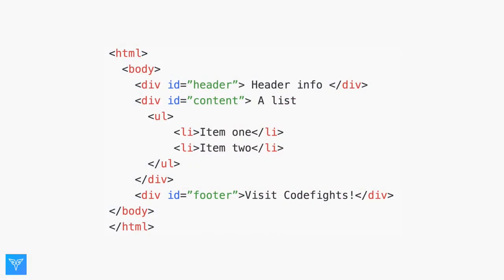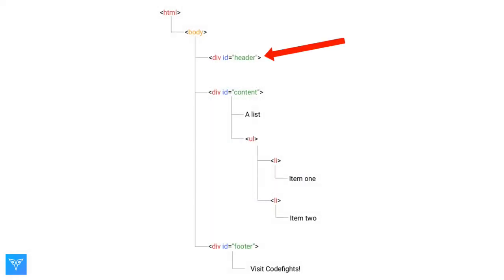Another common example of a hierarchical tree is the document object model, or DOM, used in HTML. Each opening and closing tag, such as the divs, the unordered list, and list items, are nodes.